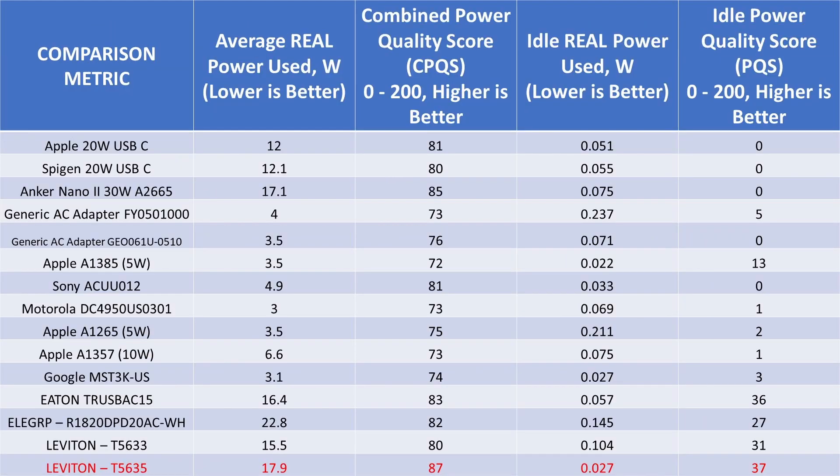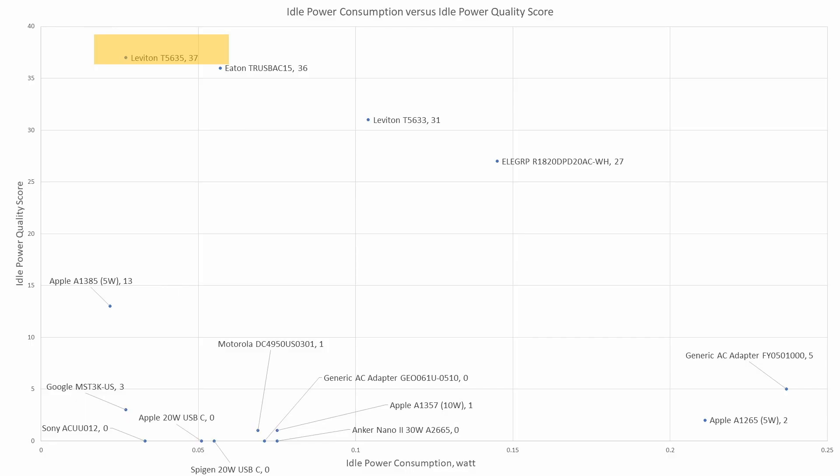When comparing with the other devices, we can see that the T5635 is basically the best in class device amongst everything that's been tested so far. It has the highest power quality for both idle and for the combined, and this has very low idle power consumption. So when looking at this on the graph, we can see it's pretty far to the left side of the screen and also towards the top of the graph, which is exactly what you want to see.